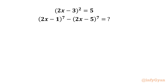Let's get started by considering the required expression equal to e. We can see 2x − 3 is given in the bracket, and here we have 2x − 1 and 2x − 5. If we add 2 to (2x − 3) we get 2x − 1, and if we subtract 2 from (2x − 3) we get 2x − 5. So we can think about the difference of two squares identity.